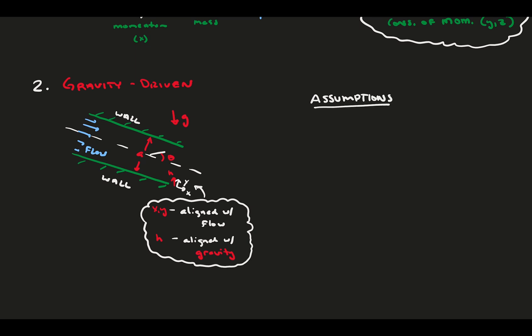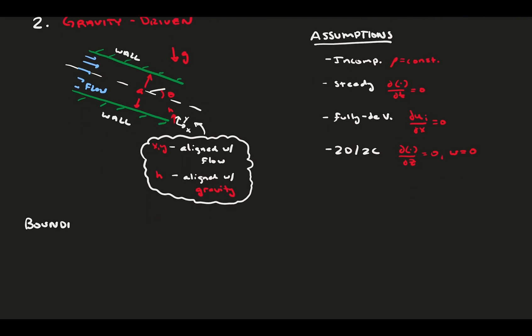We have almost all the assumptions as before. It's incompressible, steady, fully developed, two-dimensional, and two-component. However, we do have a body force of gravity, so the no body force assumption doesn't apply here. Our boundary conditions are at the wall again, and are the no slip and no penetration condition.